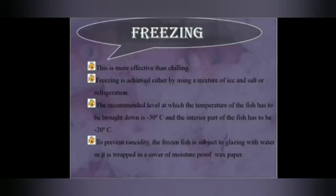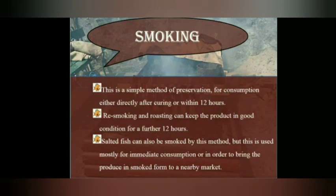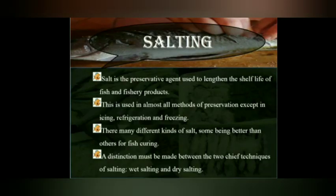Freezing is more effective than chilling and is achieved using ice, salt, and refrigeration techniques. It is maintained at minus 30°C with an internal fish body temperature of minus 20°C, reducing rancidity and allowing preservation for longer durations. Smoking is another preservation method where curing is done within 12 hours, followed by re-smoking and roasting; salted fish can also be smoked. Salting is one of the most common preservative methods for increasing shelf life and is used across refrigeration, freezing, and other techniques.